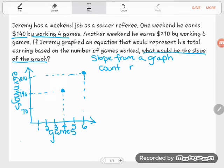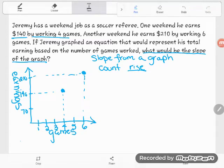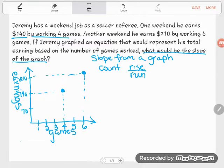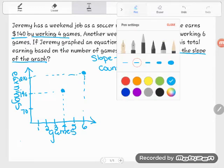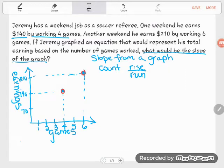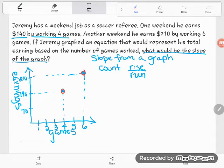We count what we call the rise, that's the change in y, how much your graph is going up or down, over the run, the change in x, how much you're going left or right. So I'm going to look from one of these points to the next: how much do I need to go up and how much do I need to go over? Let's measure the rise first.